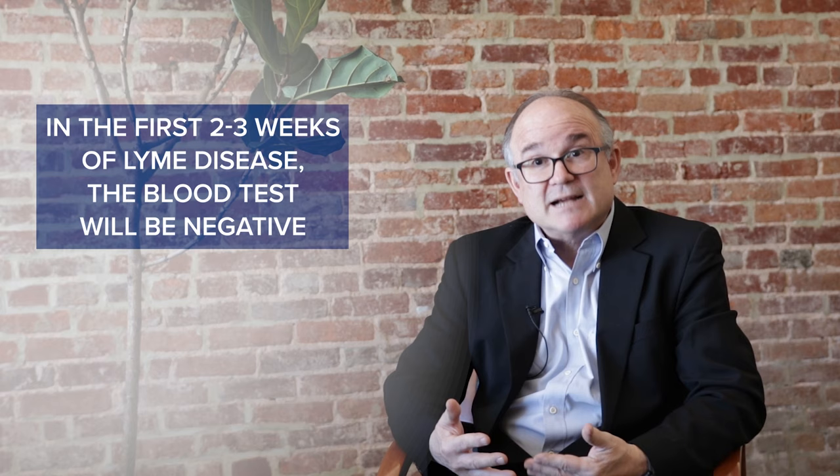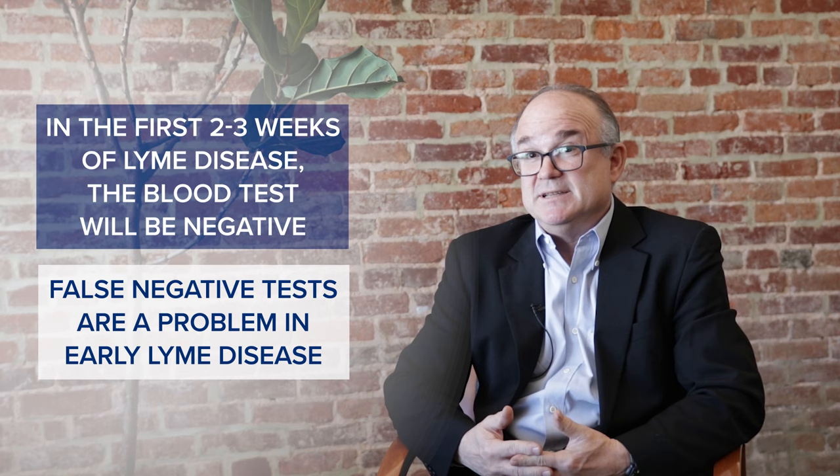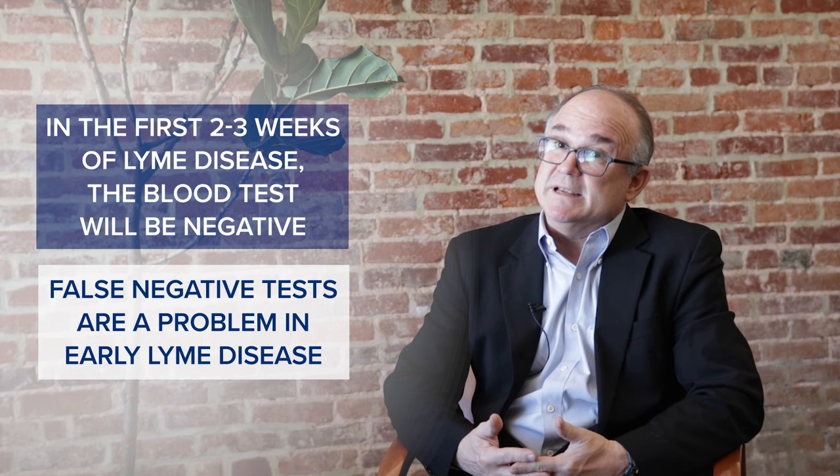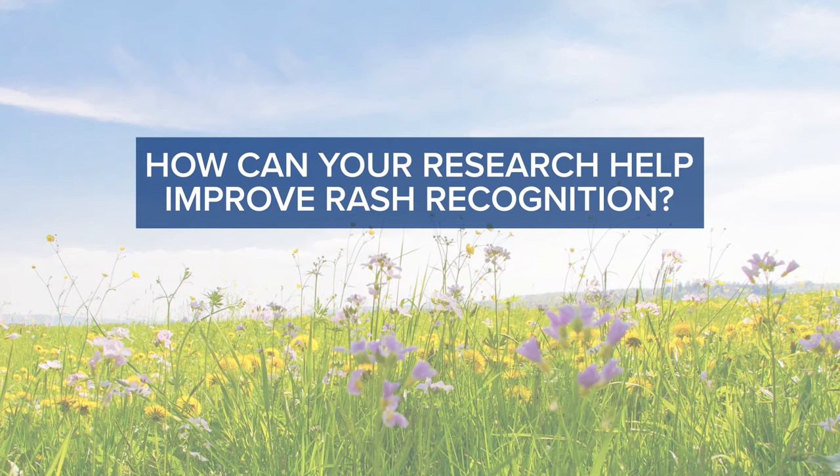Early Lyme disease is what we call a clinical diagnosis, based on the accurate identification of the Lyme rash. This is so important because blood tests actually don't work in the early initial weeks of Lyme disease. It takes several weeks for the body's immune system to make the antibodies measured by the blood test. During this initial two-to-three-week period, the blood test will be negative because antibodies haven't formed to a high enough level.